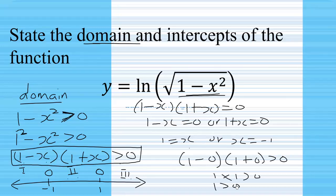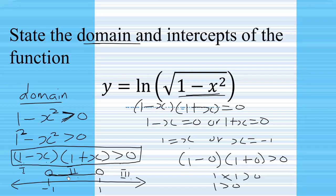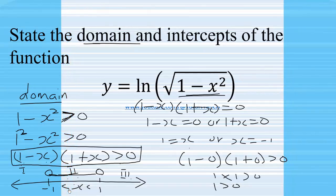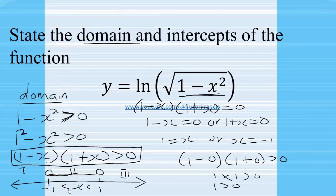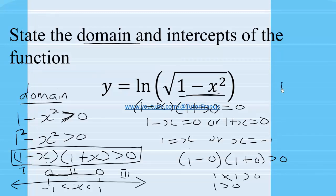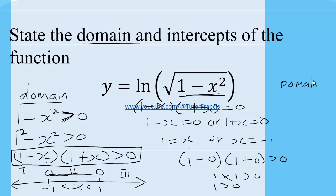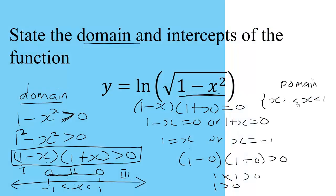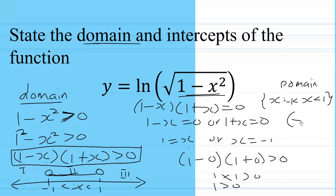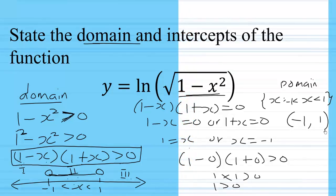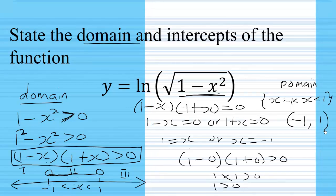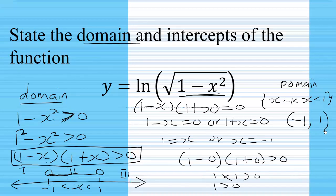The solution to the inequality runs from negative 1 to 1, meaning x is greater than negative 1 and less than 1. So the domain is the set of x such that negative 1 is less than x is less than 1, or in interval notation, the open interval (negative 1, 1).